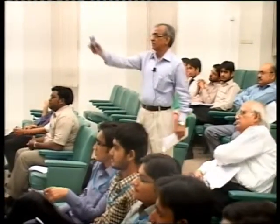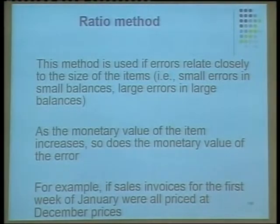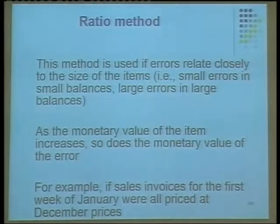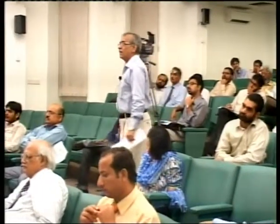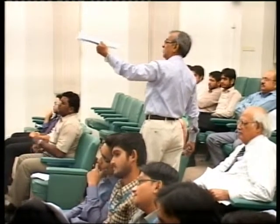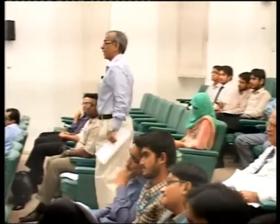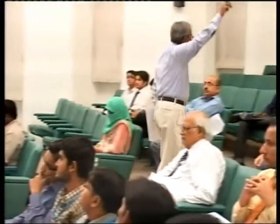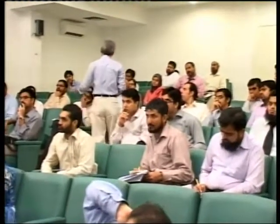So what do we do? For monetary error — for example, all invoices were priced at December prices instead of January prices — you can apply this. The projected error is estimated by extrapolation: error found in sample divided by sample value, multiplied by population value — the unitary method. What we do in the last step: add the items tested 100%, add anomalous errors, and then add it all together finally.